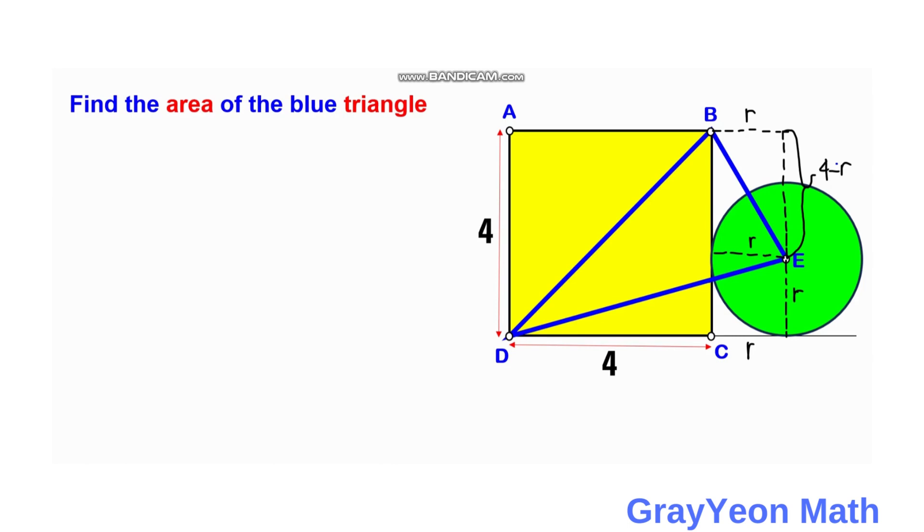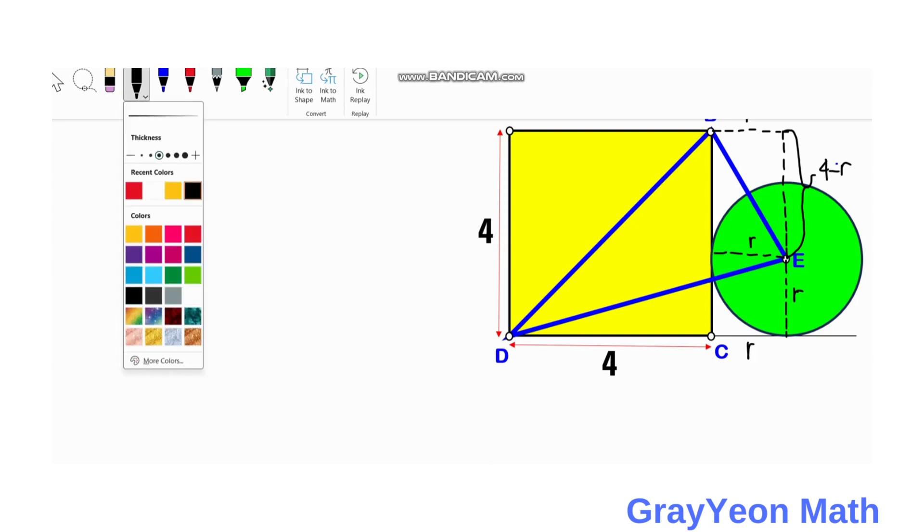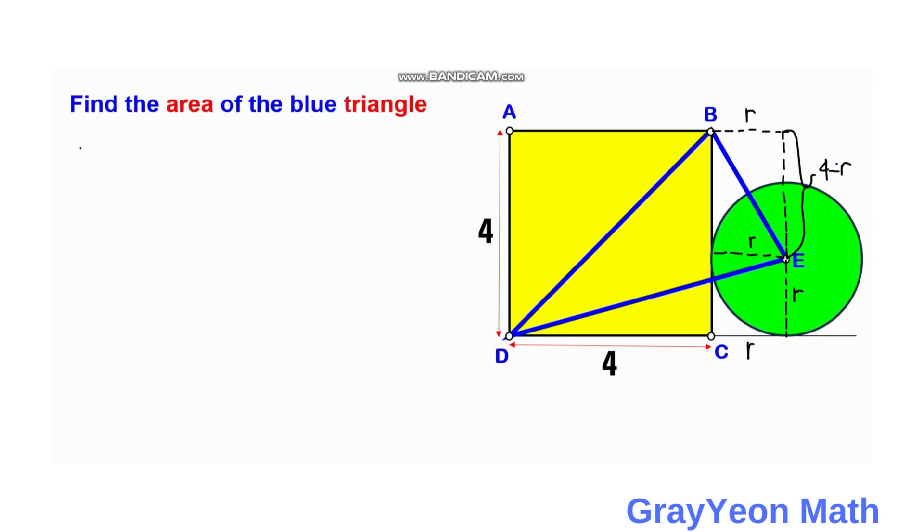And next we consider the trapezoid. So we have here the trapezoid form. So let's call this as C, D, F, and this is G. So if we consider the trapezoid, then we subtract these two areas, this triangle and this triangle below, this triangle here.